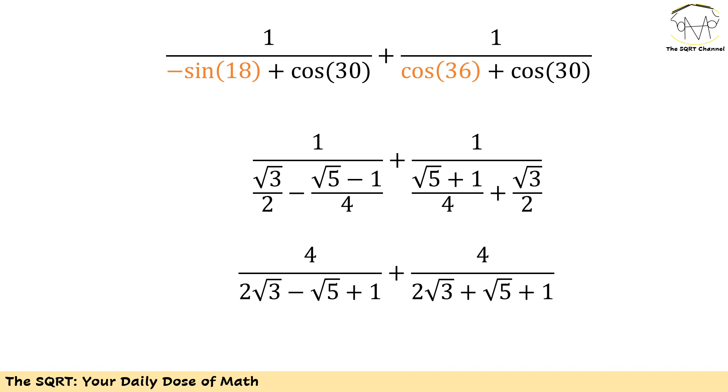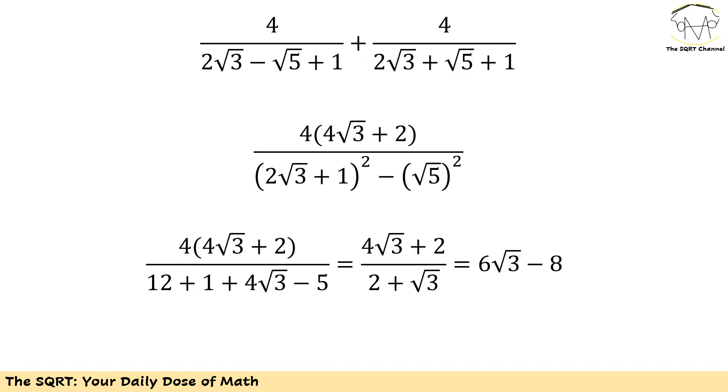Now we are using √3/2 for cos 30, and then after applying some simplification you are seeing two terms. For both of them we have 4 as denominator, then we have 2√3 plus 1 minus √5 and 2√3 plus 1 plus √5 as the denominator. From here you just need to apply some simplifications. If you are having problems, follow the steps that I have here and at the end you will see 6√3 - 8 as the final answer.